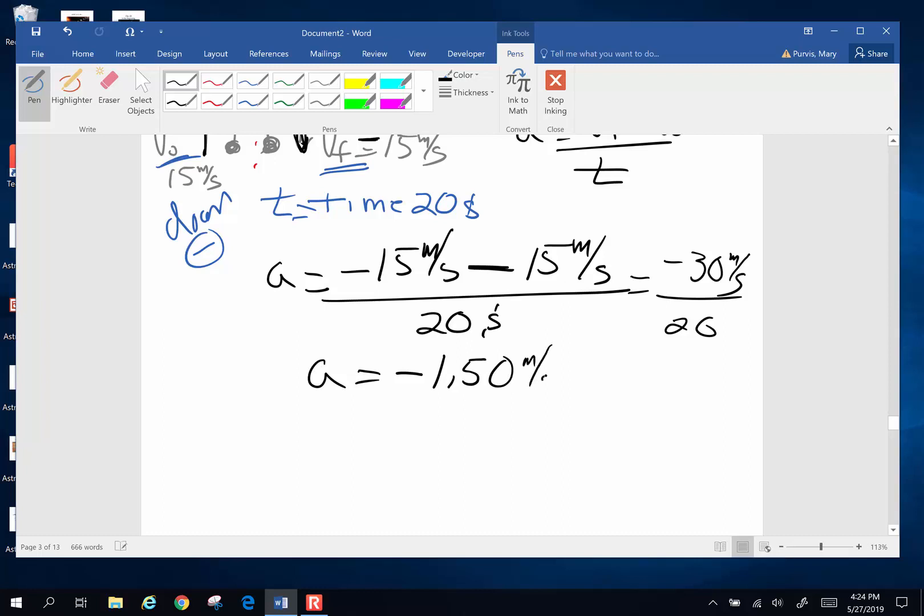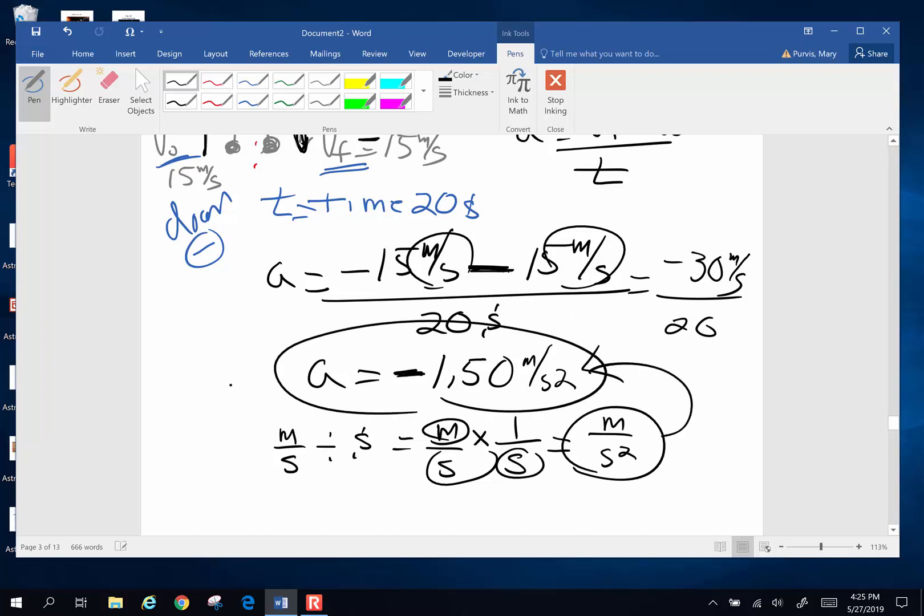It should be meters per second squared. Now where do those units come from? I have got meters per second on the top. We can subtract these because they have the same unit, divided by seconds. So meters per second, invert and multiply, 1 over seconds. Meters on top, seconds times seconds, seconds squared on the bottoms, yippity skippity, I've got acceleration units. It's negative, which means gravity is pulling it downward. By golly, physics works sometimes.